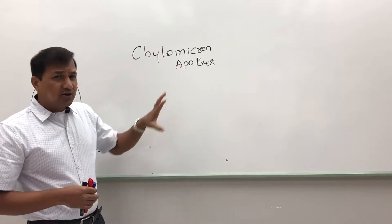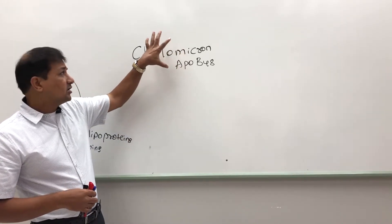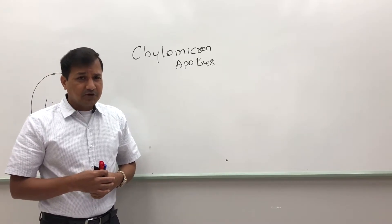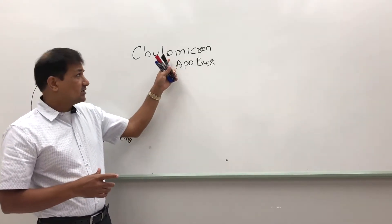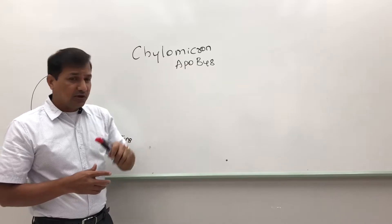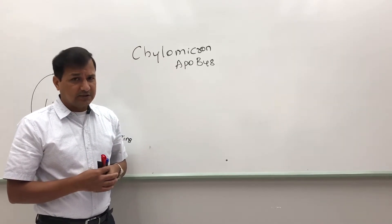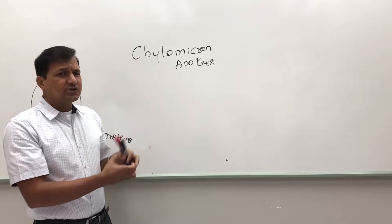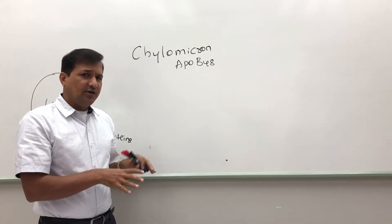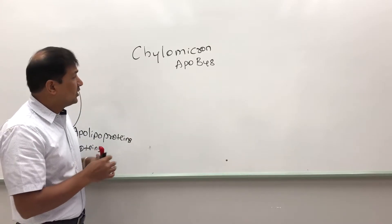Chylomicron is the biggest lipoprotein that we have. It is synthesized in the intestine and the major apolipoprotein present on it is APO B48. It also has APO C2 and other apolipoproteins — a link for the detailed video on that is in the description below.